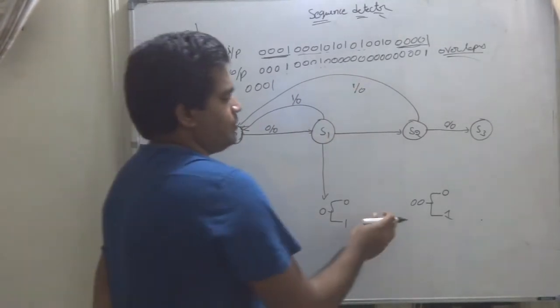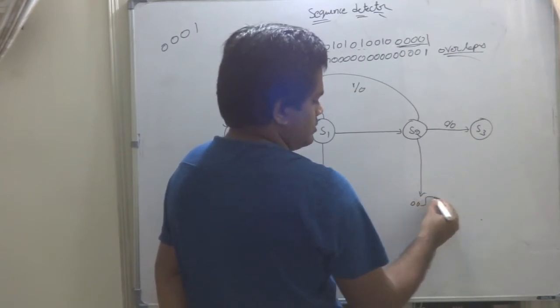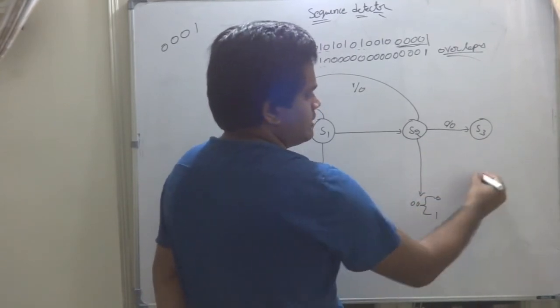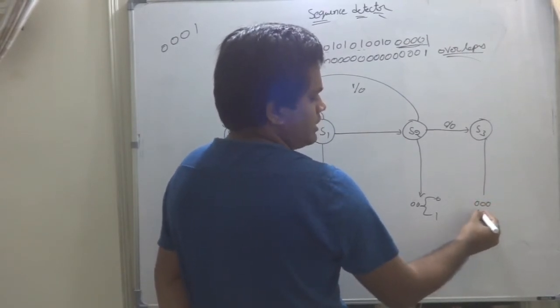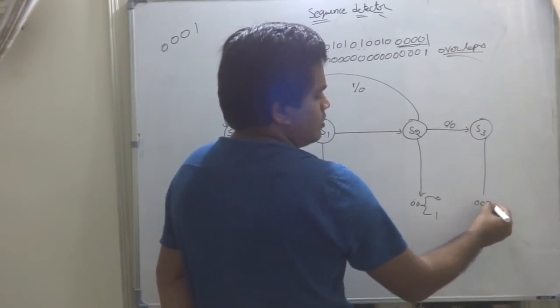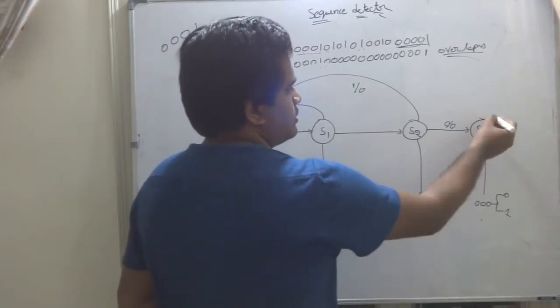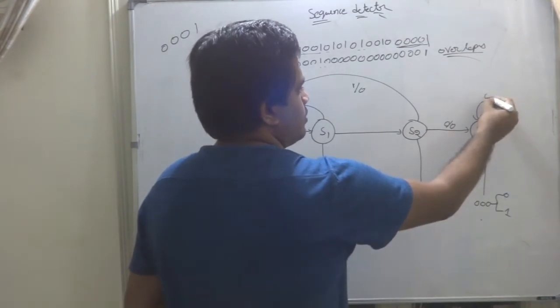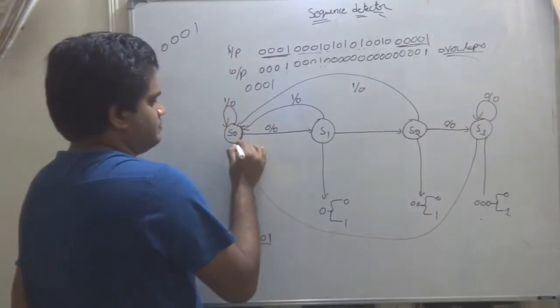For S3, S3 state what? Here, 00, again, 0 and 1, right? S3 state, what is the sequence is detected? 00 is detected. And now, there is a possibility either 0 or 1. Now, if 0 comes, it is in same state. I will tell you why it is in same state. If 1 comes, it will go here.